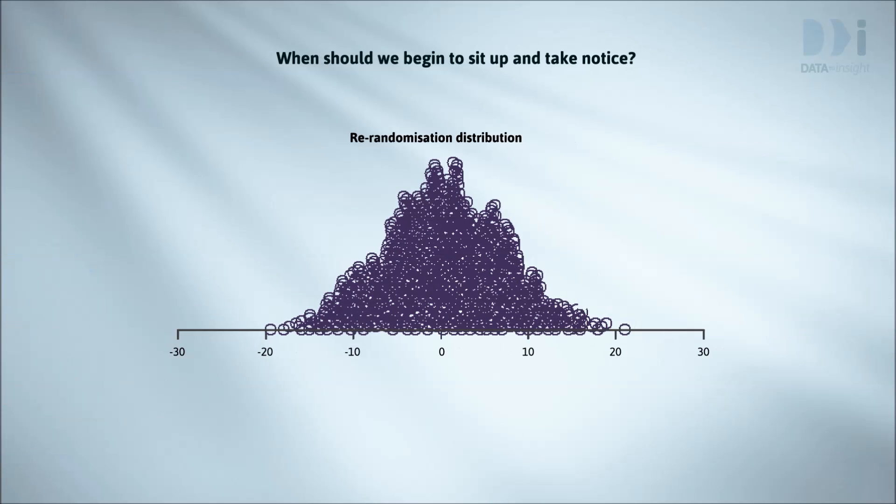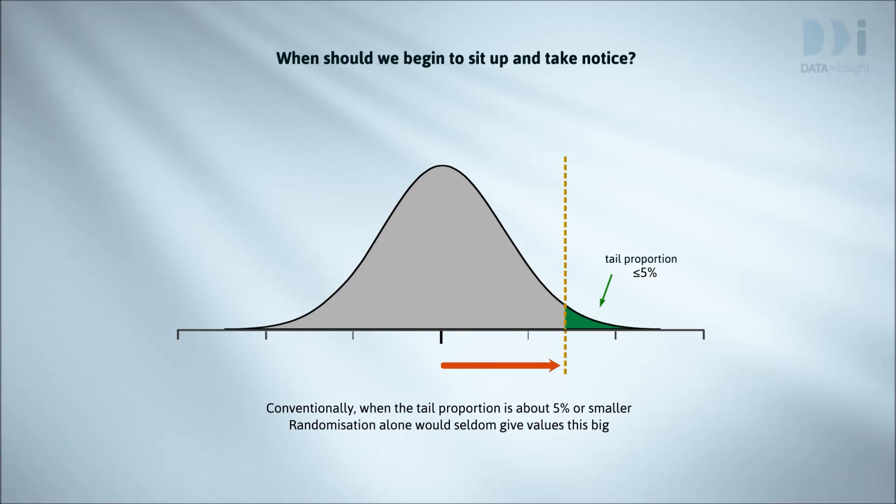Conventionally, people start concluding something real has probably happened if the tail proportion is about 5% or smaller. In this case, randomization alone would seldom give values this big. 19 times out of 20, it'd be smaller.